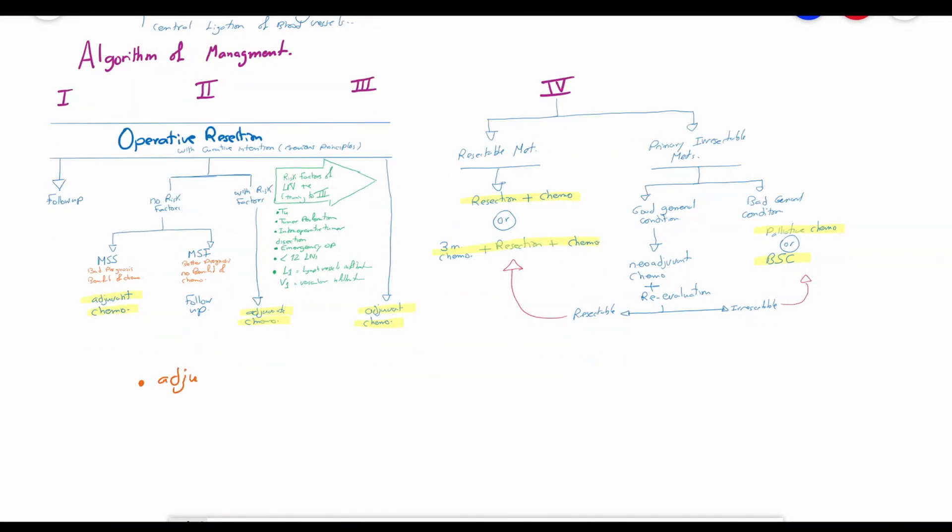So, take-home messages are adjuvant chemotherapy depends on the lymph node metastasis evidence or potential, resectable metastases are potentially curable, and neoadjuvant therapy is only of benefit in potentially resectable metastases.